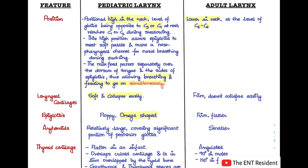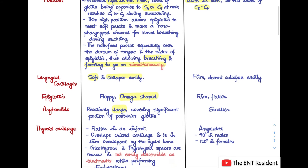Moving to the arytenoids: they are relatively large in infants and cover a significant portion of the posterior glottis, whereas in adults the arytenoids are much smaller.